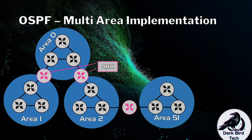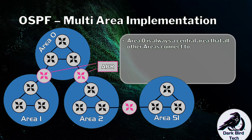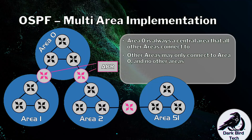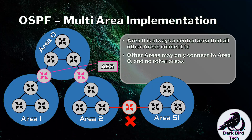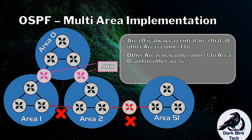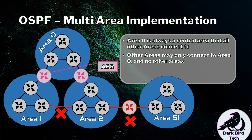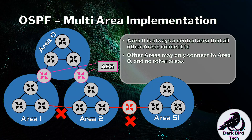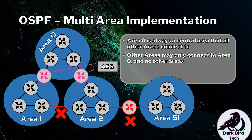With multi-area OSPF there are a few rules. Area 0 is always the central area that all other areas connect to, and other areas may only connect to area 0 and no other areas. So connecting area 51 directly to area 2 is not allowed — if area 51 wants to be part of the network, it must connect directly to area 0. Connecting area 1 and area 2 together directly is also a violation. If you want areas interconnected in a mesh-like topology, ISIS might be more suitable.